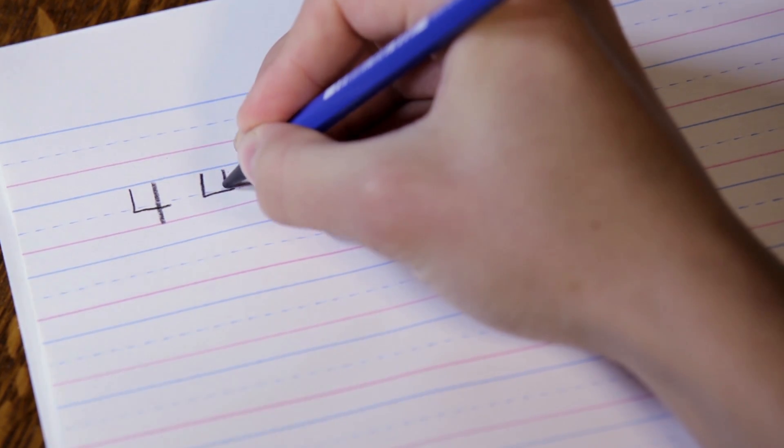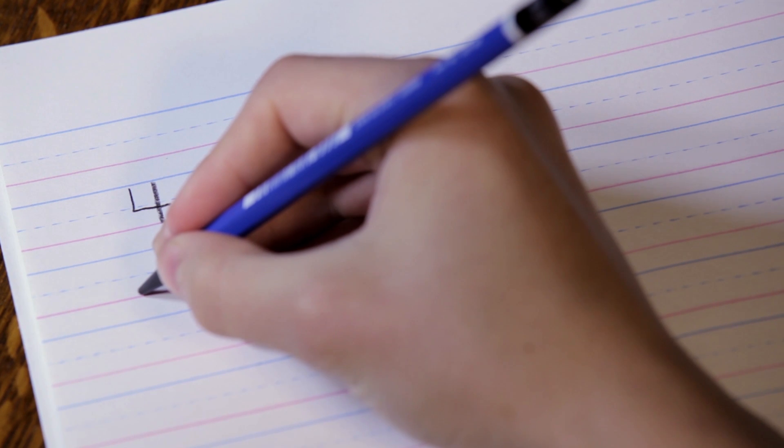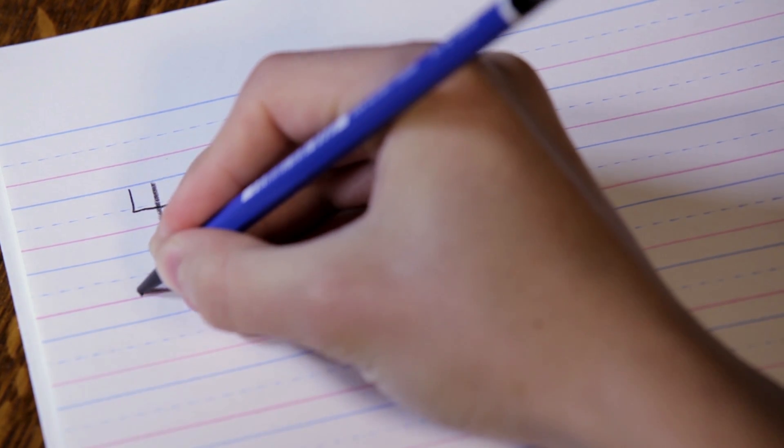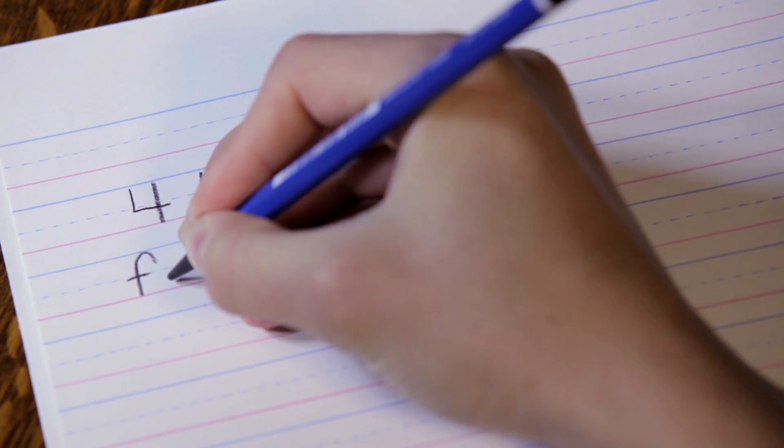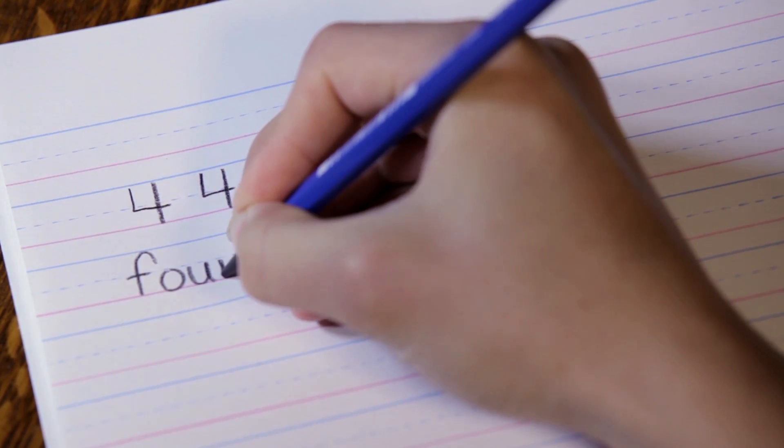Now let's spell the word for. We spell it like this: F-O-U-R. Four.